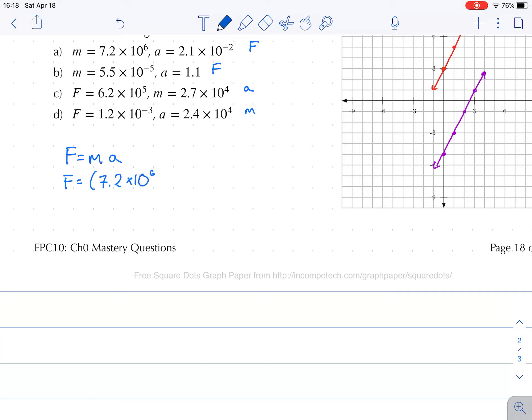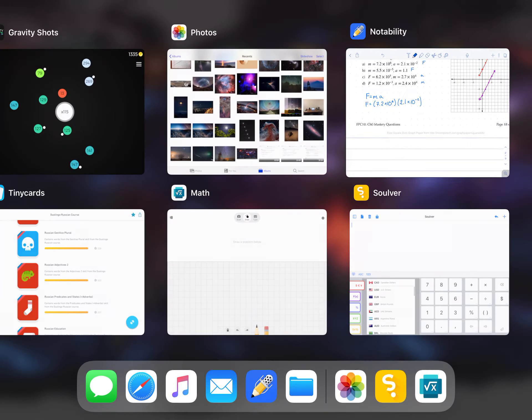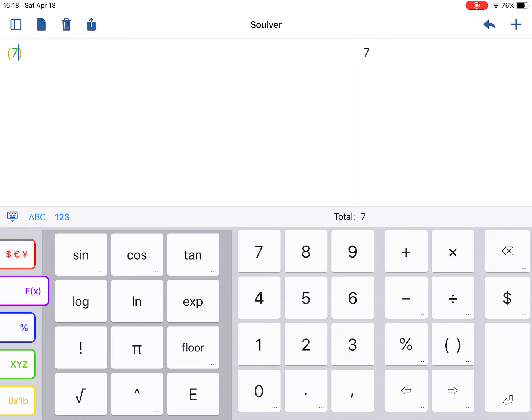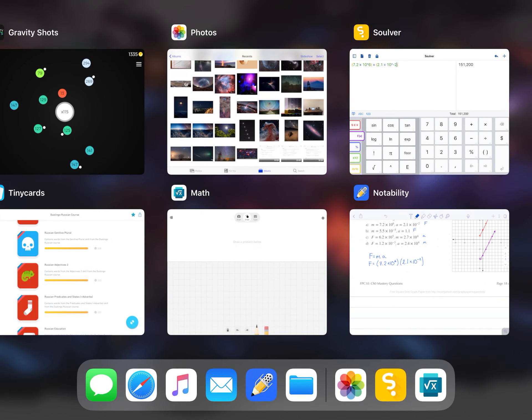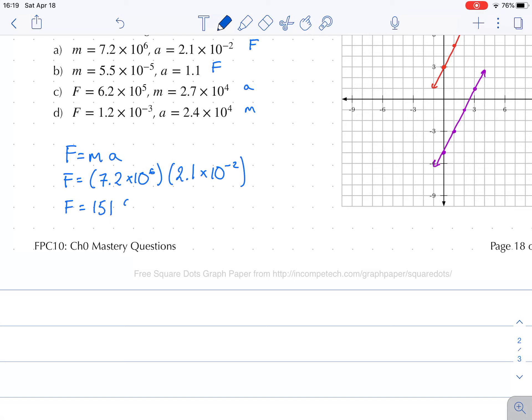Force is equal to mass times acceleration. So our force is equal to 7.2 times 10 to the power of 6 times 2.1 times 10 to the power of negative 2. All right, I'm going to use a calculator to do this, and it is important that you have a calculator where you can do this very quickly. All right, so let's go over to solver. I use solver, and my first one, in brackets, 7.2 times 10 to the power of 6 times it by, brackets, 2.1 times 10 to the power of negative 2. And that gives me a total of 151,200.